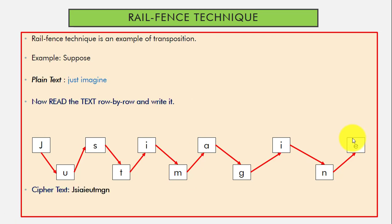Step 2, now we will read the text row by row and write it down. This is the first row and here we have second row. Now we will read this row by row. So in first row, we have J-S-I-A-I-E. In second row, it's U-T-M-G-N.